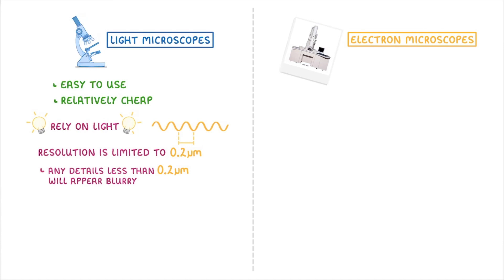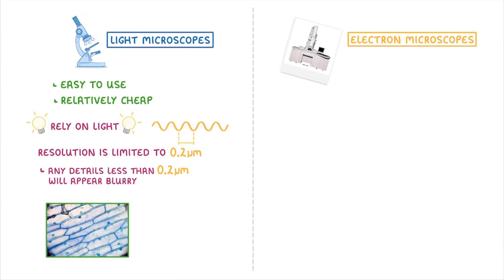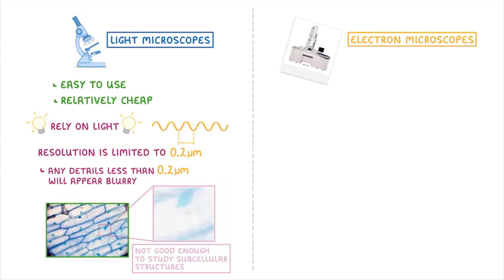This basically means that any details less than 0.2 micrometers apart will appear blurry. So while we can use light microscopes to see individual cells, like these onion cells, they're not good enough to study the sub-cellular structures found within cells, like mitochondria.